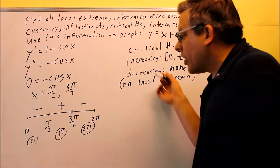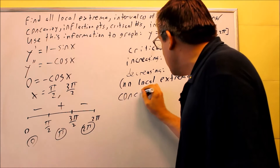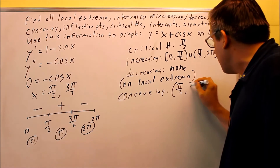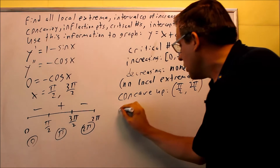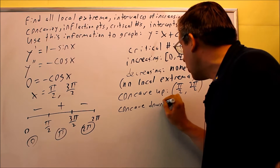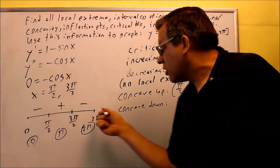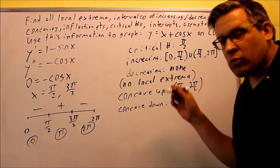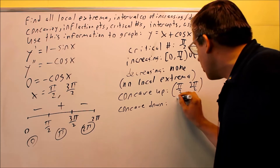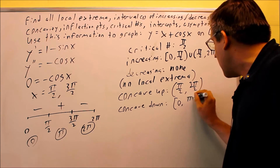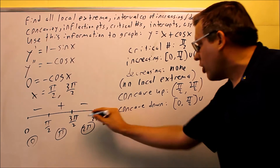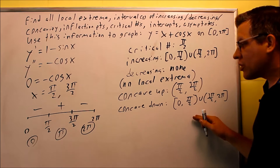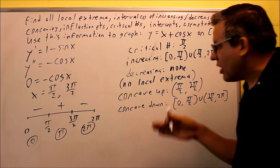Now we're ready to talk about concavity. Concave up is where we see a plus, so that's from pi over 2 to 3 pi over 2. Concave down is where we have negatives — remembering to include the endpoints, that's from 0 to pi over 2 and from 3 pi over 2 to 2 pi, with brackets on the closed ends. The second derivative tells you concavity.